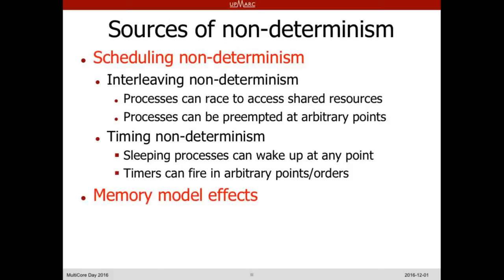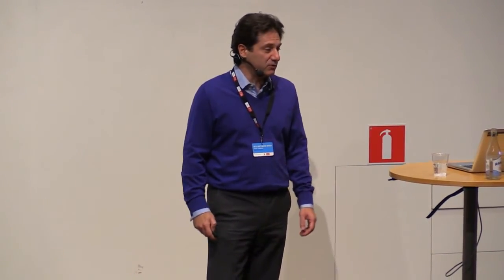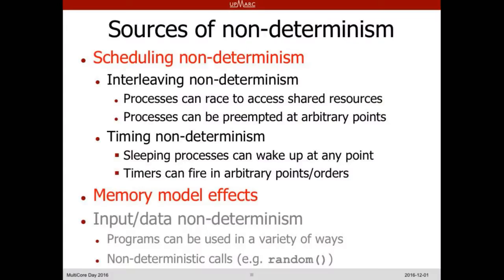On top of that, when concurrency enters the picture, you have memory model effects. We heard about these in other talks, so I won't say too much, but you have to handle them — especially in low-level languages like C or anything compiled to assembly. And then there is one more source of non-determinism: input or data non-determinism. For that, with the systematic concurrency testing tools we provide, you have to deal with it yourself — none of the tools handles input or data non-determinism.